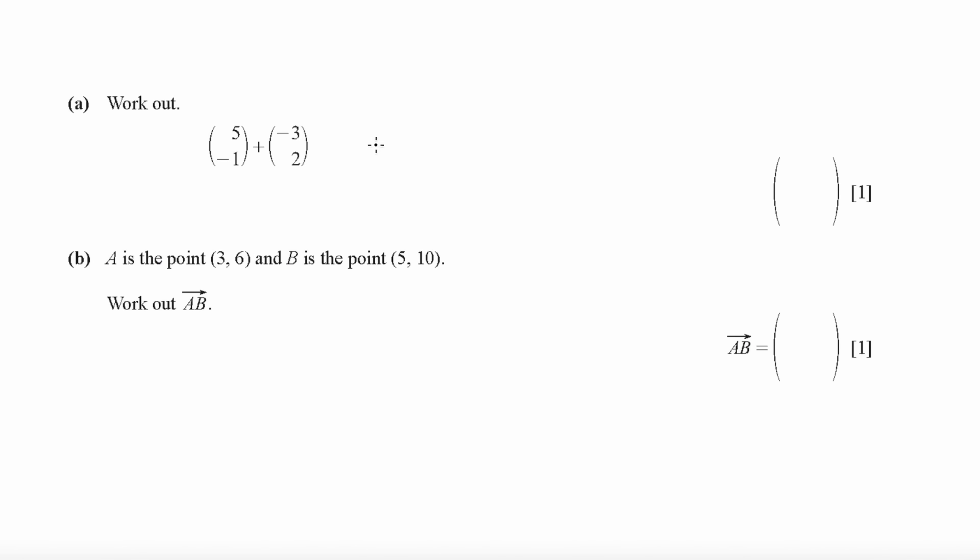Here is a question on vectors. You simply have to just minus it like this: 5 minus 3 is 2, minus 1 plus 2 is 1. For this, you can write it as A is (3, 6) and B is (5, 10). If I want to find A to B, I just simply have to do (5, 10) minus (3, 6), giving us (2, 4).